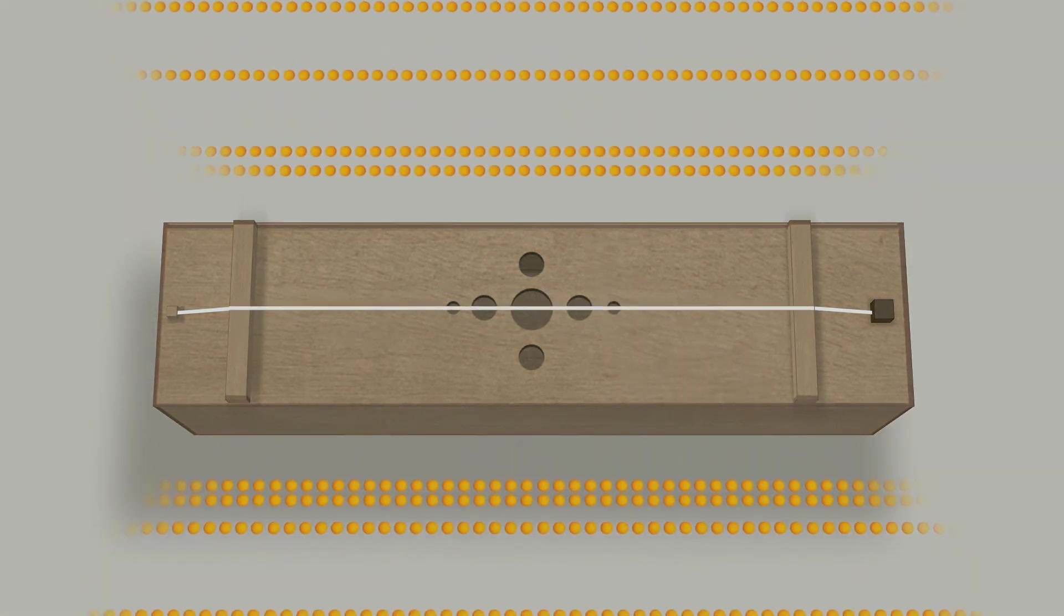Plucking causes the string to vibrate. This vibration travels through the air at the speed of sound. Let us consider two points, point A in the air and point B on the string.